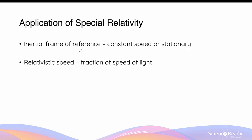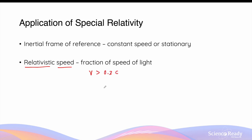the effects of special relativity have limited applications. Specifically, effects such as time dilation and length contraction can only be fully attributed to special relativity in inertial frames of reference, which are frames of reference with either constant speed, at rest, or stationary. These effects only become apparent when the frame of reference is moving at a relativistic speed — a fraction of the speed of light. Usually this occurs when a velocity is greater than 0.3c, so 30% of the speed of light.